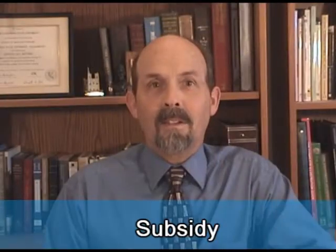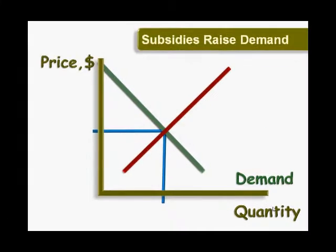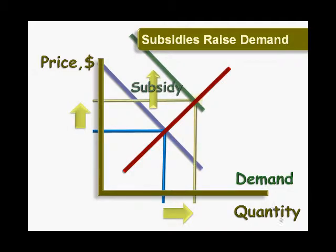A subsidy, on the other hand, encourages something that we'd like to see more of, like education or home ownership. A subsidy is a payment or a tax relief from the government in return for doing or buying something we think has some extraordinary social benefits. Subsidies have the opposite effect of taxes because they make things less expensive. A subsidy paid to consumers raises the demand curve since what they're willing and able to pay now includes a payment or tax break from the government.